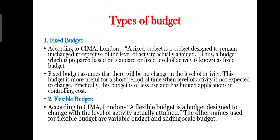According to CIMA London, a fixed budget is a budget designed to remain unchanged irrespective of the level of activity actually attained. Thus a budget which is prepared based on a fixed level of activity is known as a fixed budget. Fixed budget does not change with the level of activity. For example, when making a budget we decide that sales will be 20,000 — that is one fixed level of activity. In a fixed budget there is always one level of activity; no variation is allowed.